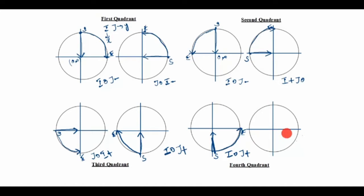In the same fourth quadrant, the starting point is here and the end point is here. The arc comes here and the arrow goes this way. The end point is in the Y-direction, so J is 0. For the X-axis, the arrow goes toward the minus side, so I is minus.